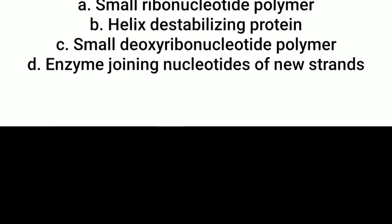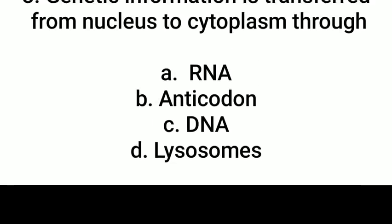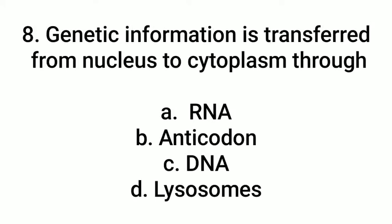Question number 7: The primer in DNA replication is A — a small ribonucleotide polymer. Question number 8: Genetic information is transferred from nucleus to cytoplasm by A, RNA. B, anticodon. C, DNA. D, lysozyme. Answer: A — RNA.